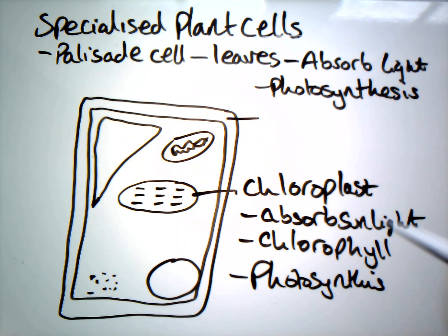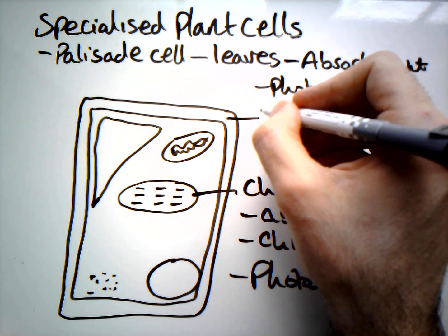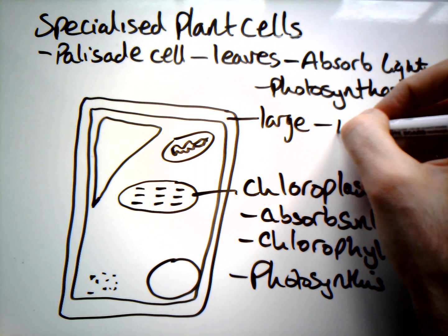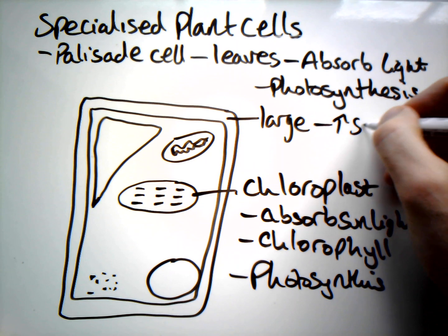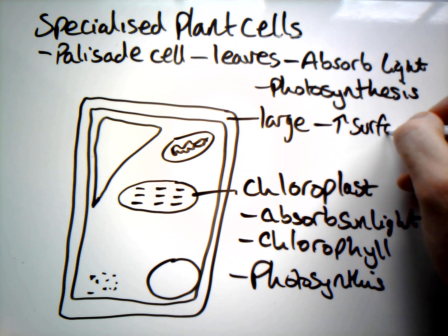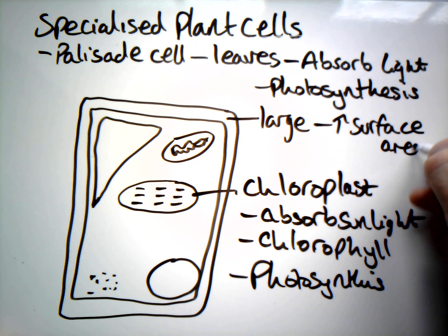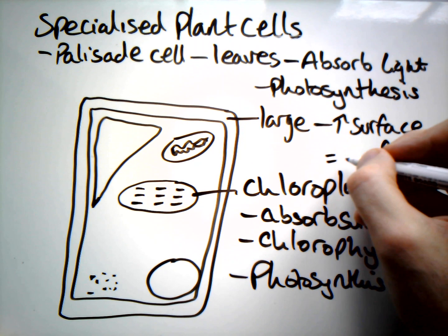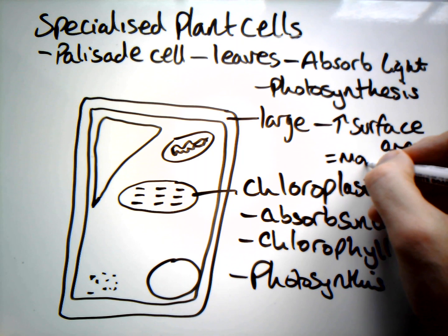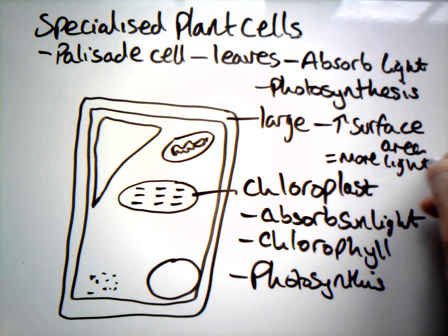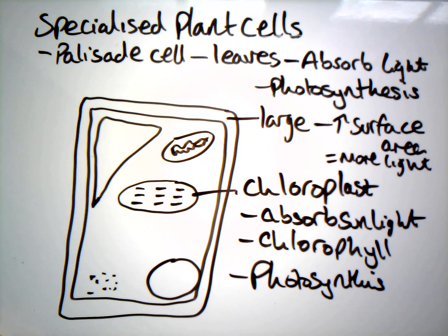The other key notable feature about these cells is they're going to be very large, and that increases the surface area. A large surface area means we can absorb more light. You'll find them in layers at the top of a leaf, and that's everything you need to know about palisade cells.